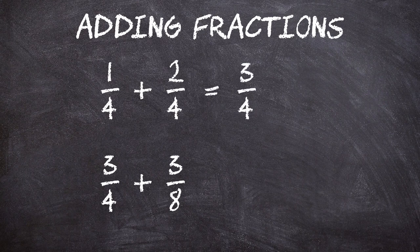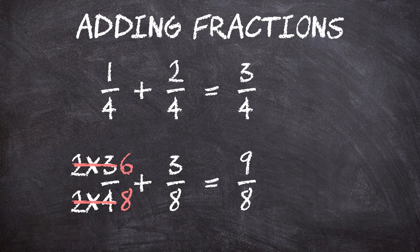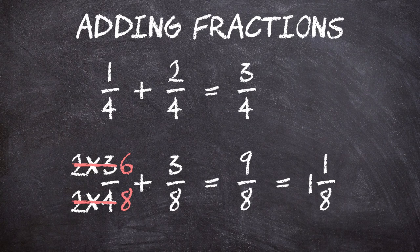What about three-quarters plus three-eighths? Well, we can't add them together yet because their denominators are different. But we can change three-quarters so that its denominator becomes eight. If we multiply both top and bottom by two, we get six-eighths. Six over eight plus three over eight is a lot easier to work with. All we have to do is add six plus three to get nine-eighths. This is an improper fraction, so we can convert it to a mixed fraction. How many times does eight go into nine? Just once, with a remainder of one. So the final answer is one and one-eighth. Three-quarters plus three-eighths equals one and one-eighth.